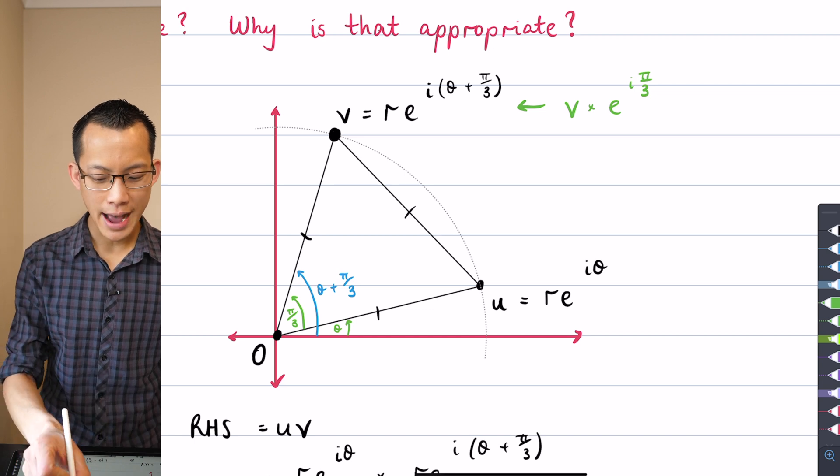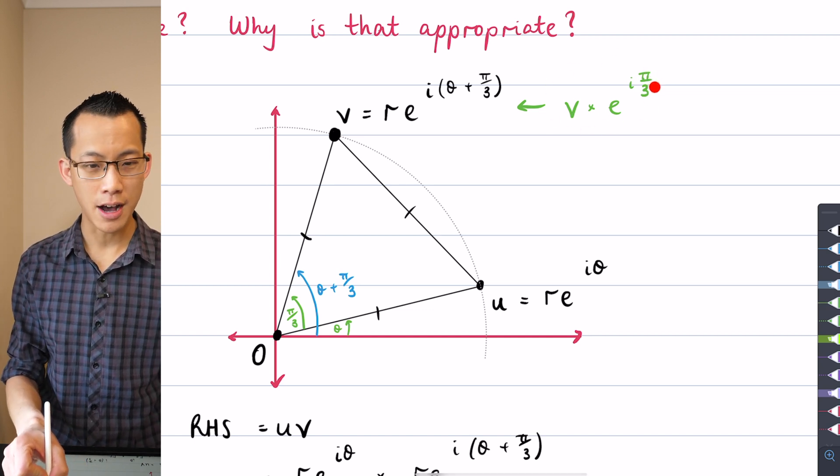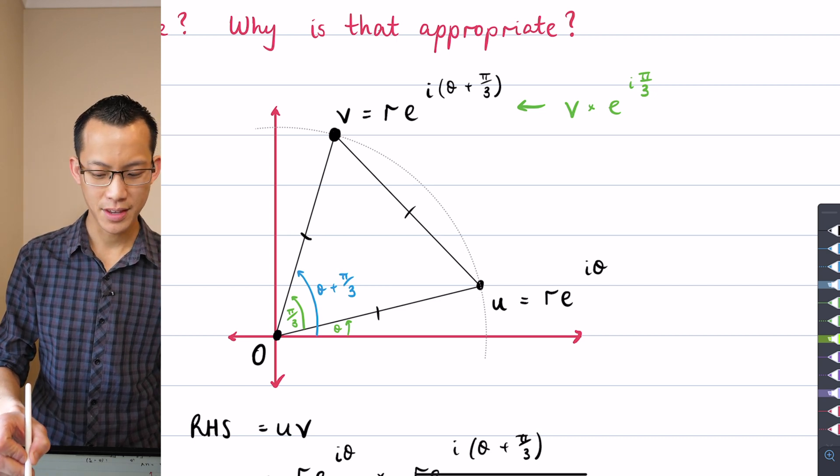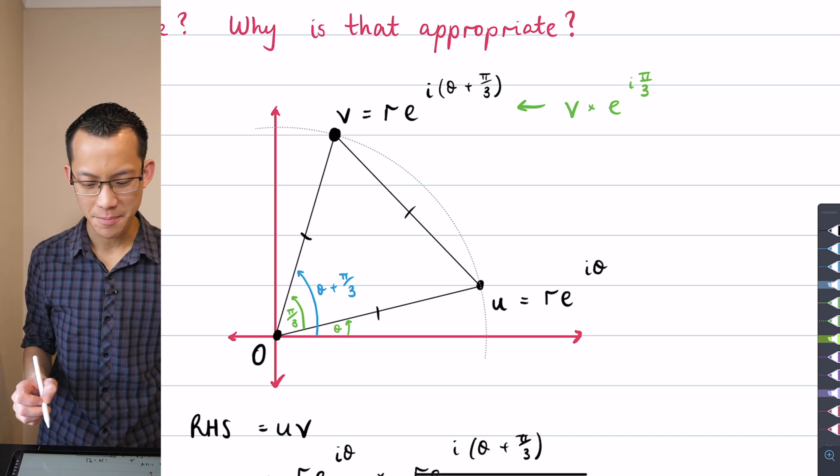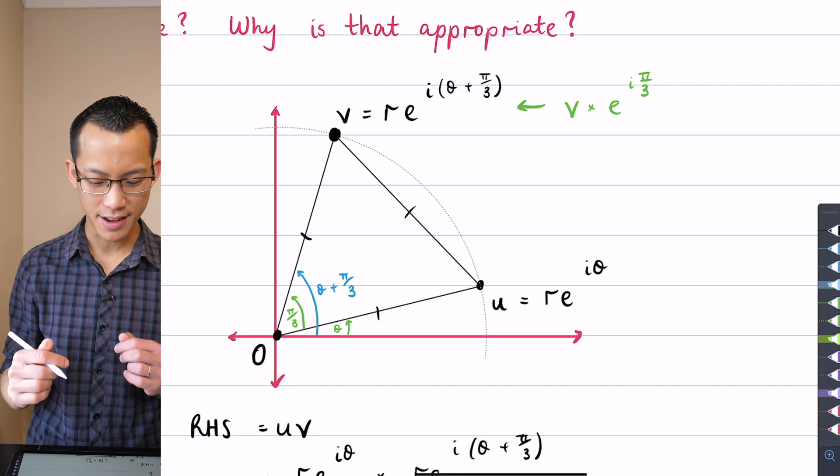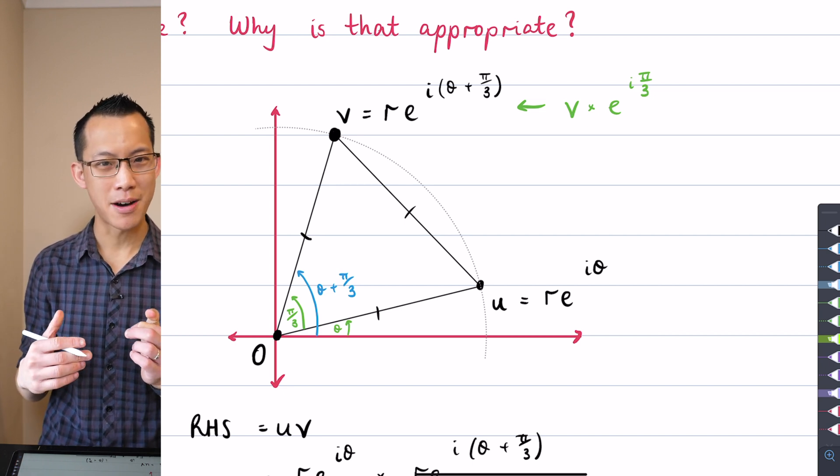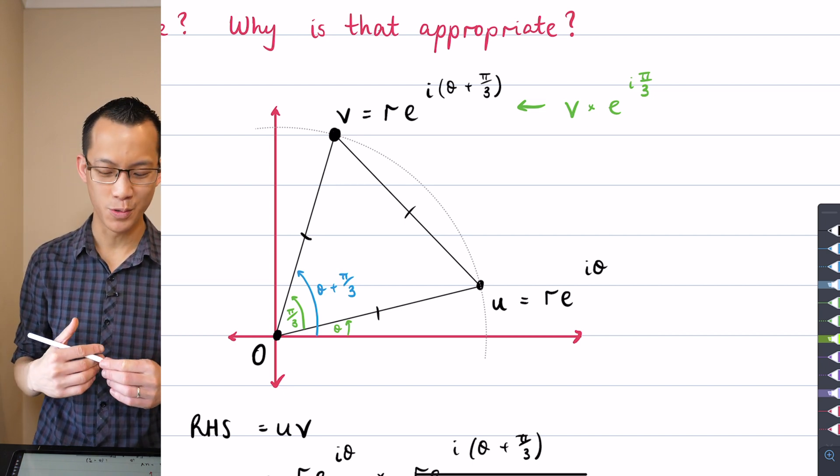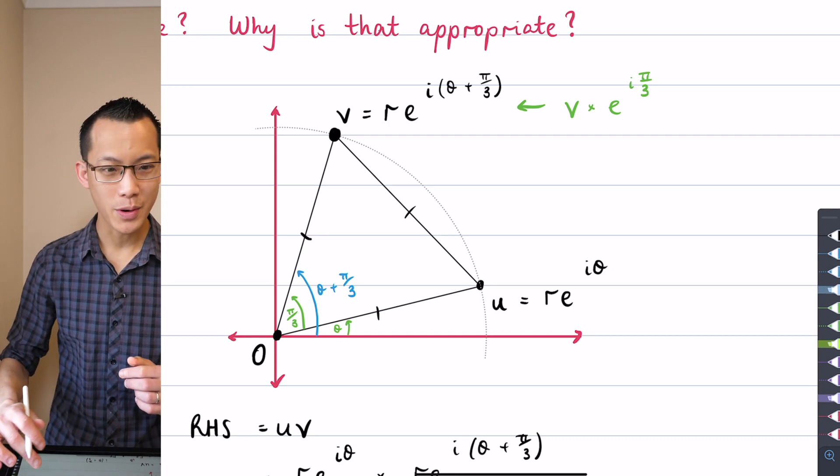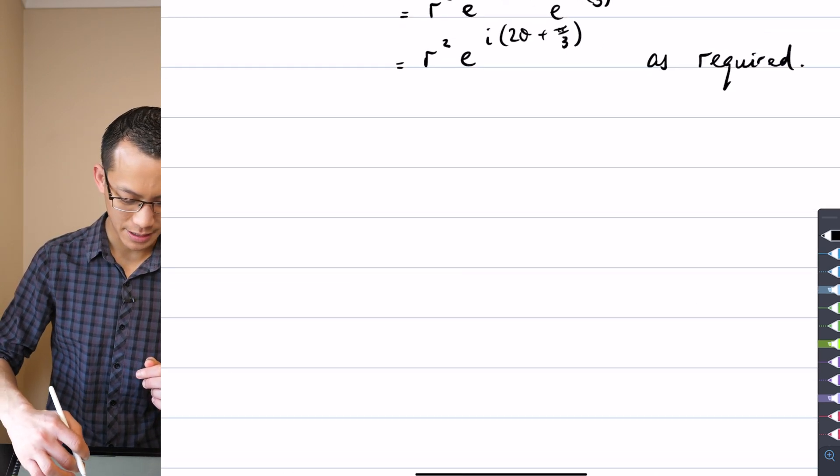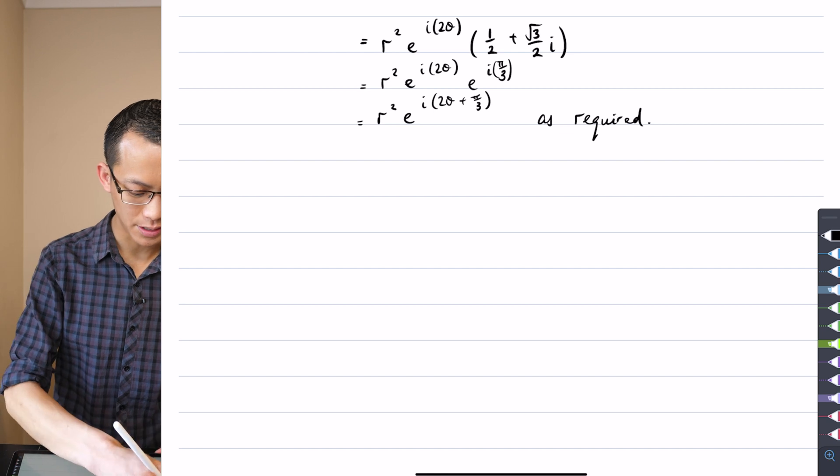So I can actually use this form here of U and V together. I can actually combine those together to show how I'm going to get my U squared plus V squared equals UV result. Here's the way I'm going to write it. Let's come down here, get some new space. So I'm going to call this method two.